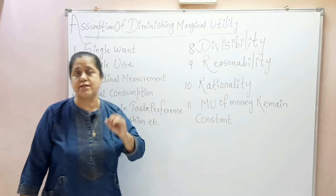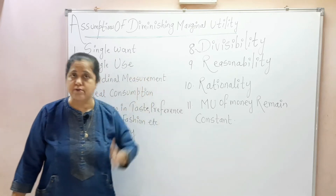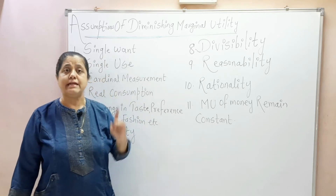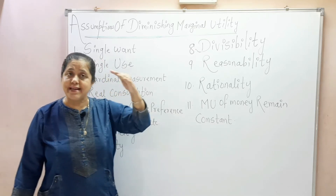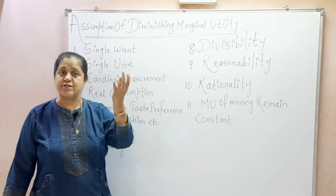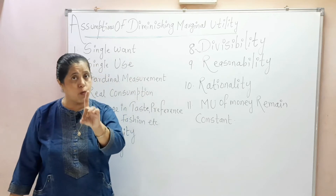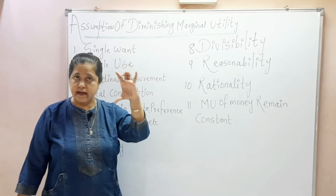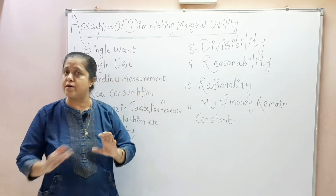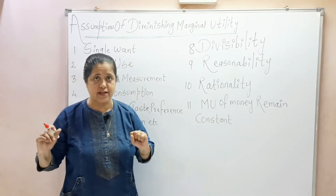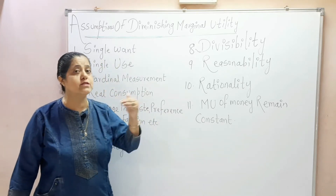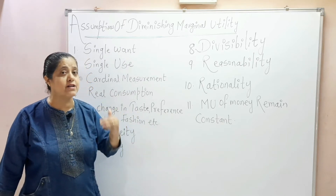Toh is tarah se, jab ye poora question, specially jab aapko eight marks ke liye long descriptive question milta hai, toh hume each and every part ko systematically likhna hai: pahele introduction, then statement of law with any one definition, then table yaani schedule, explanation, diagram or explanation, jo hamni last lecture mein discuss kiya. Aaj ham dekh rahe hain iska D part — assumptions of law of diminishing marginal utility.